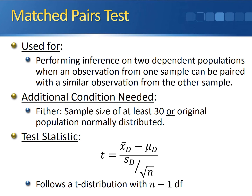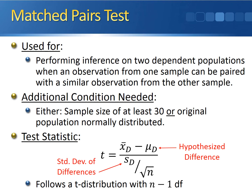If this holds, then the test statistic follows a t-distribution with n minus 1 degrees of freedom, and it's calculated by taking the sample mean difference and subtracting off the hypothesized difference in the numerator. This then gets divided by the sample standard deviation of the differences over the square root of the sample size.